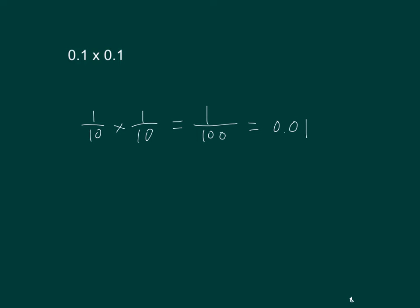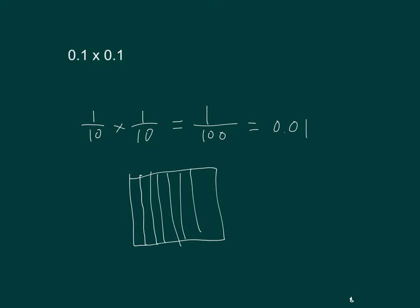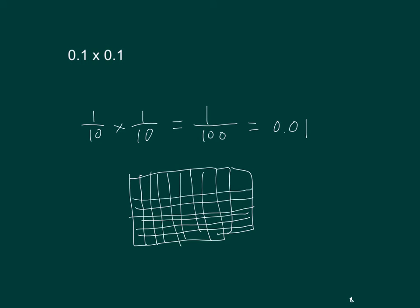Let's draw an area model to see if this makes sense. One-tenth times one-tenth is one-hundredth, so that's doubly shaded there.